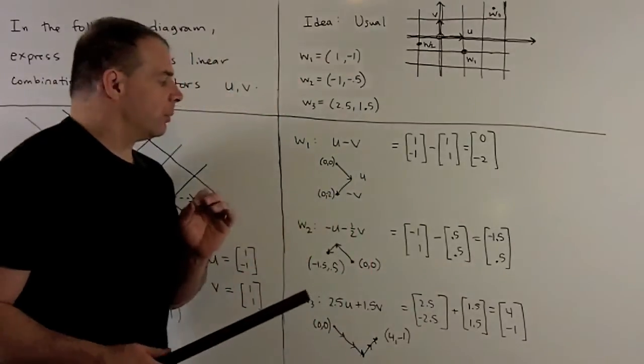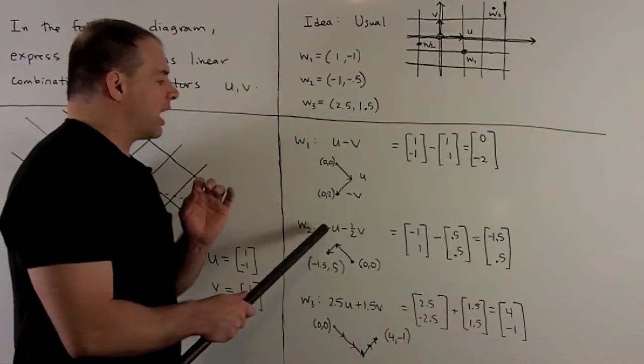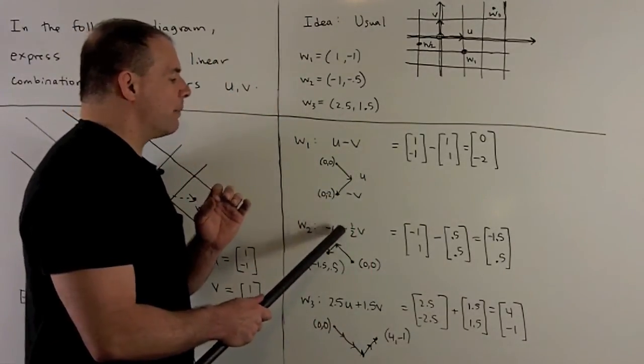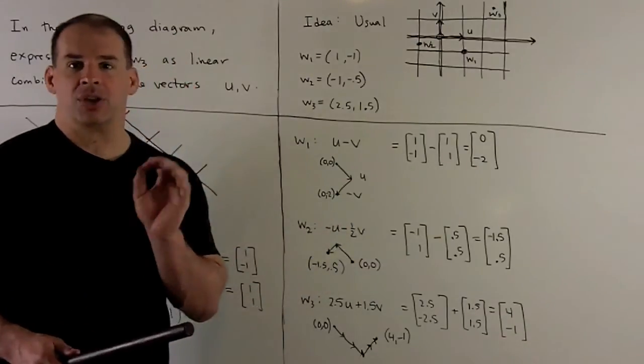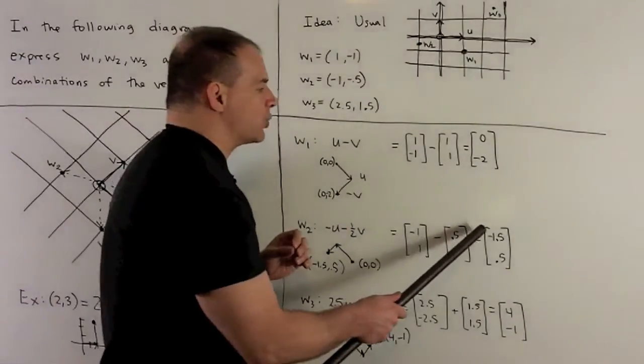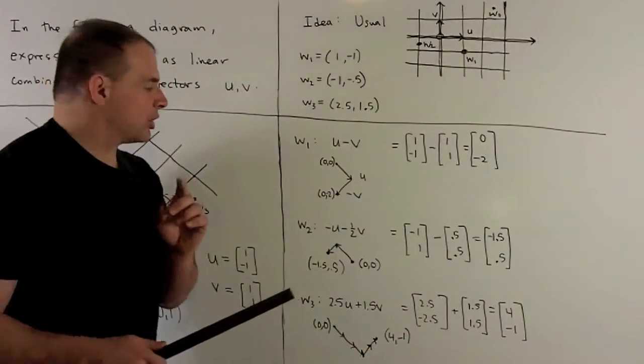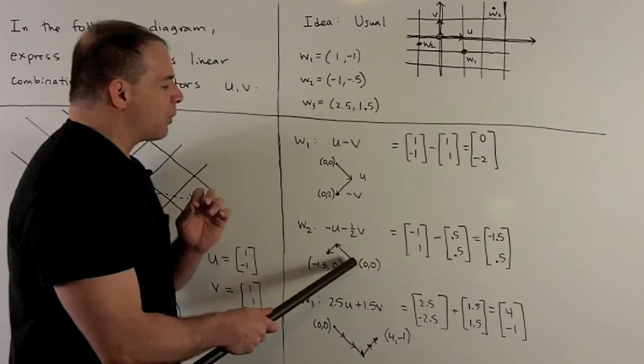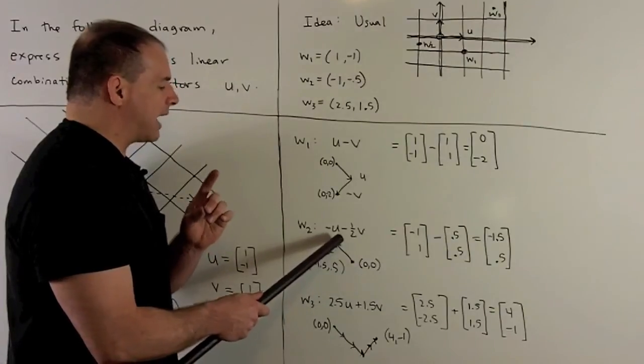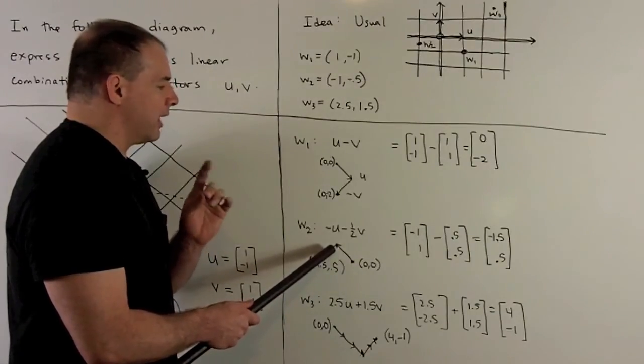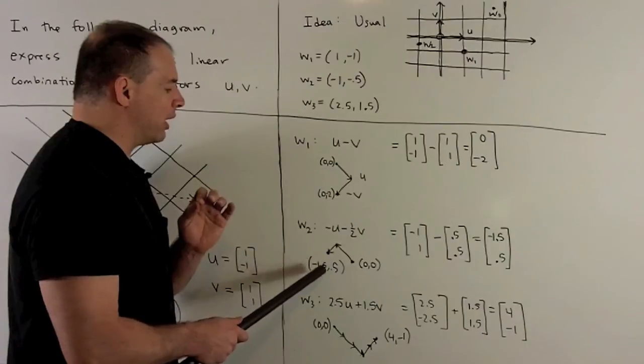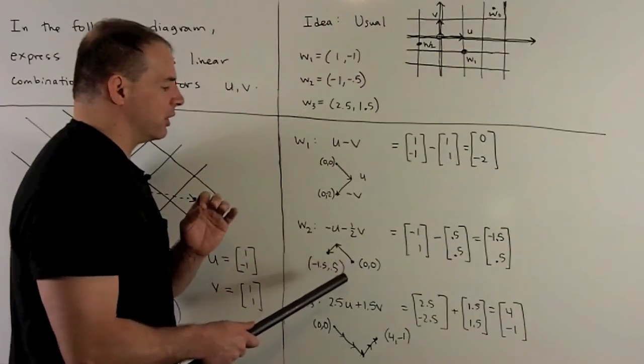For w2, same idea. The linear combination is -u - (1/2)v. You work it out in terms of x and y, get (-1.5, 0.5). Then for the vectors, we're just going to go back 1 in u and then back a half in v. And then that's going to agree with our (-1.5, 0.5) relative to the origin.